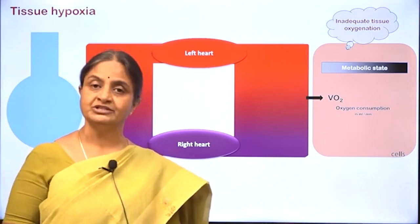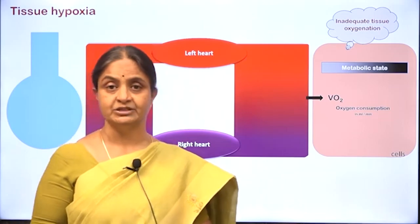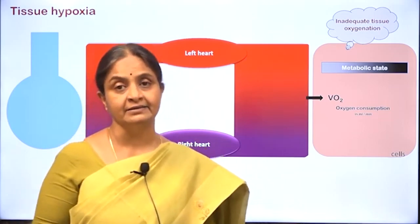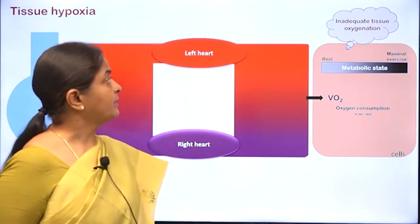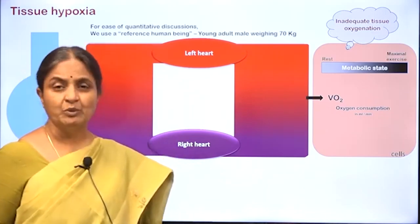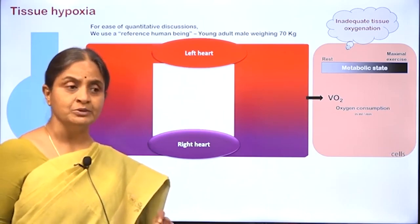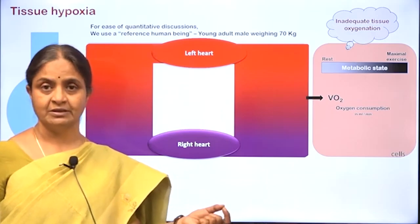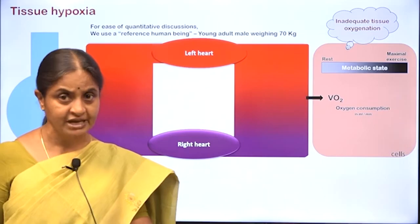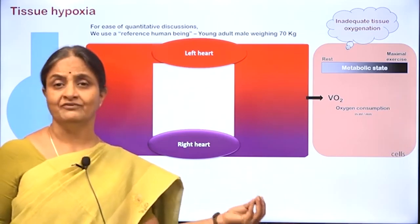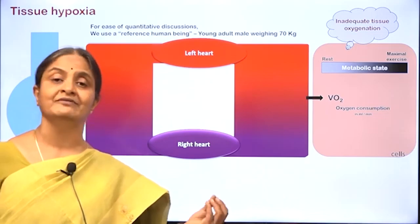Let us look at what oxygen consumption is like at rest in a reference individual and at maximal or submaximal exercise. In physiology, when we want to refer to standard values, we use a reference human being: a young adult male of 70 kilograms. When we say cardiac output is 5 liters per minute, it refers to this reference adult male, not a child or a woman weighing 50 kilograms.